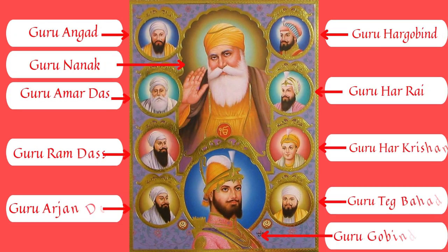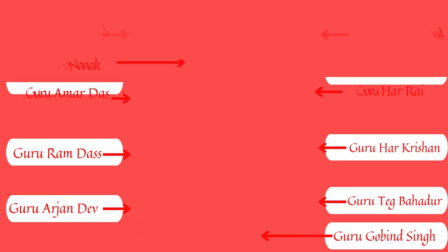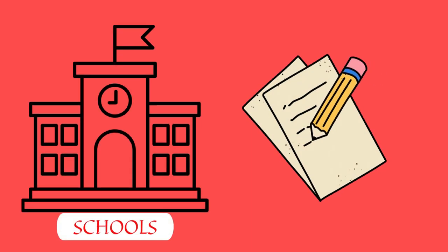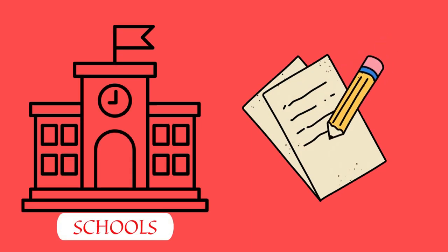Sikhism explained in a quick short story. In total, there were 10 Sikh gurus spreading their faith from the 15th century through to the 16th century. Throughout these years, the Sikhs grew bigger in number. They taught people that women were equal to men, and opened schools and new centers for the Sikhs to strengthen their base.